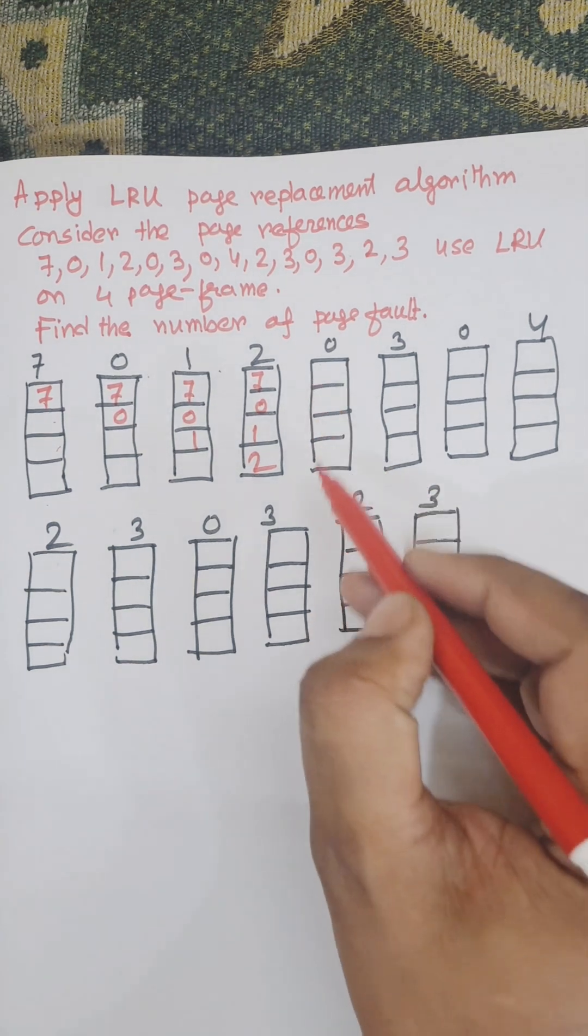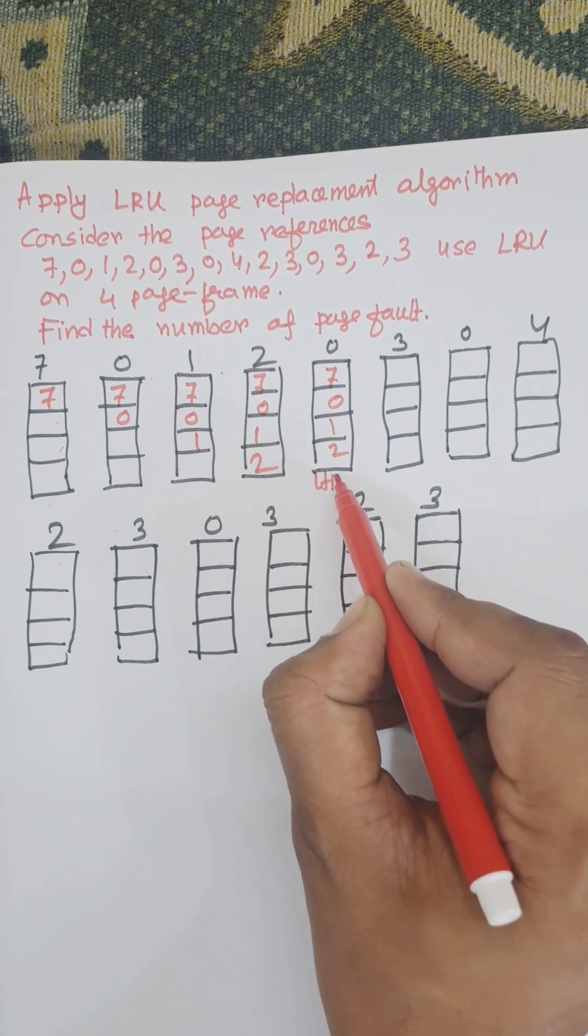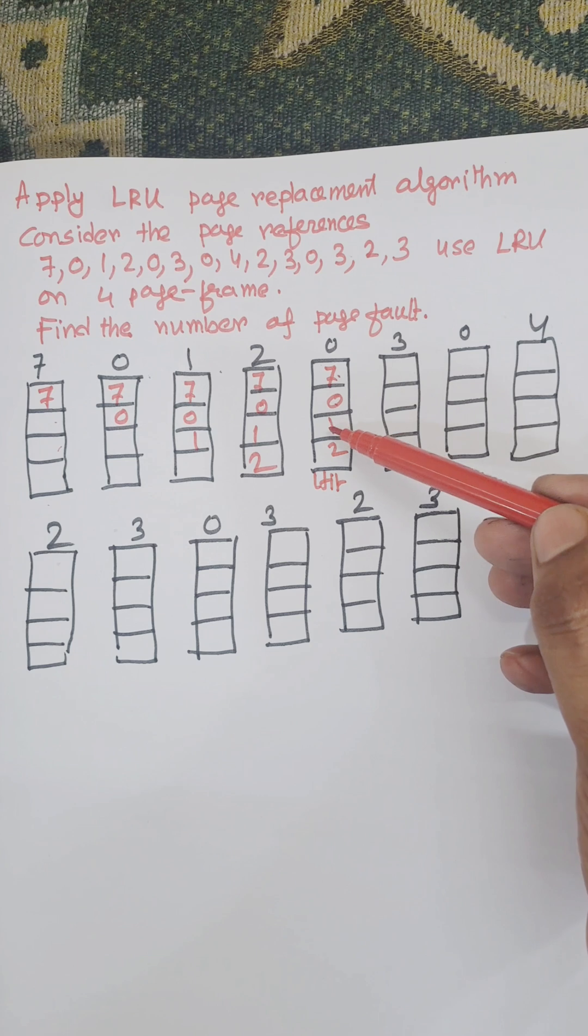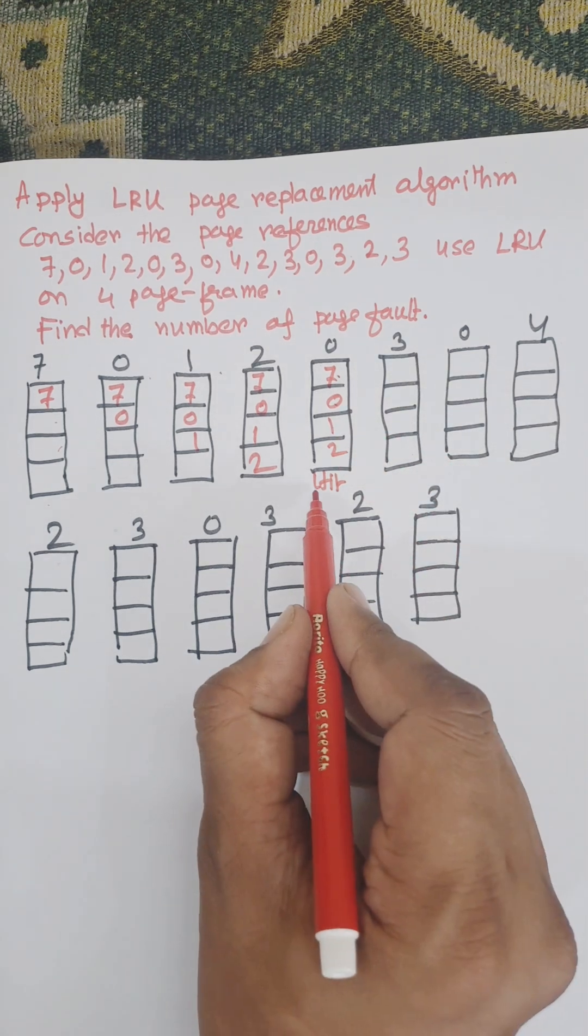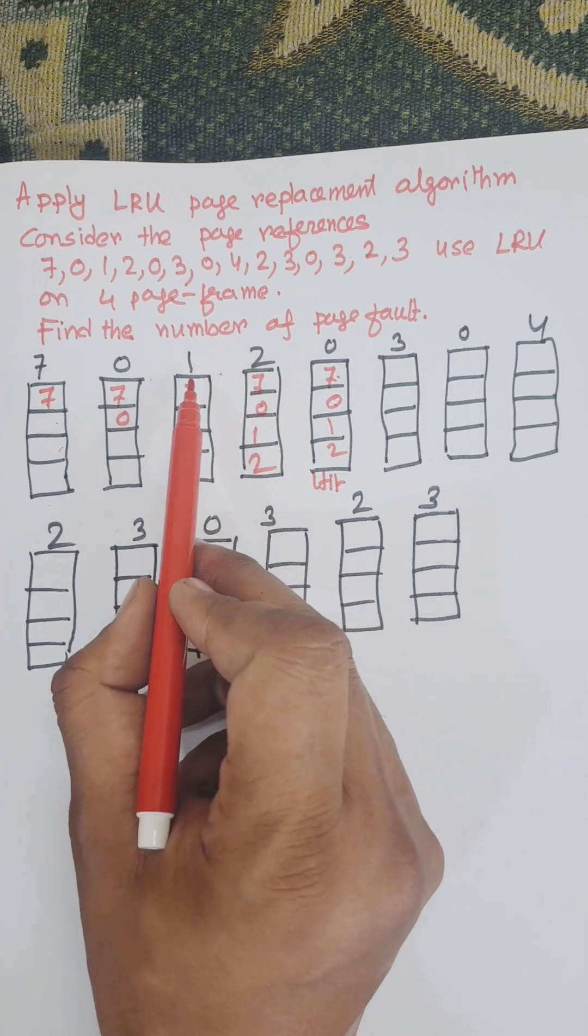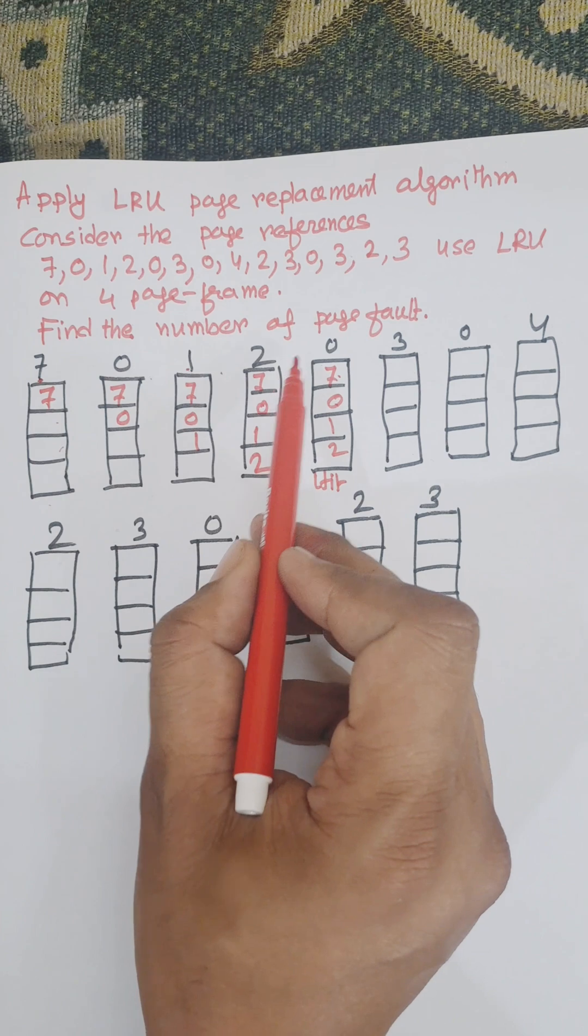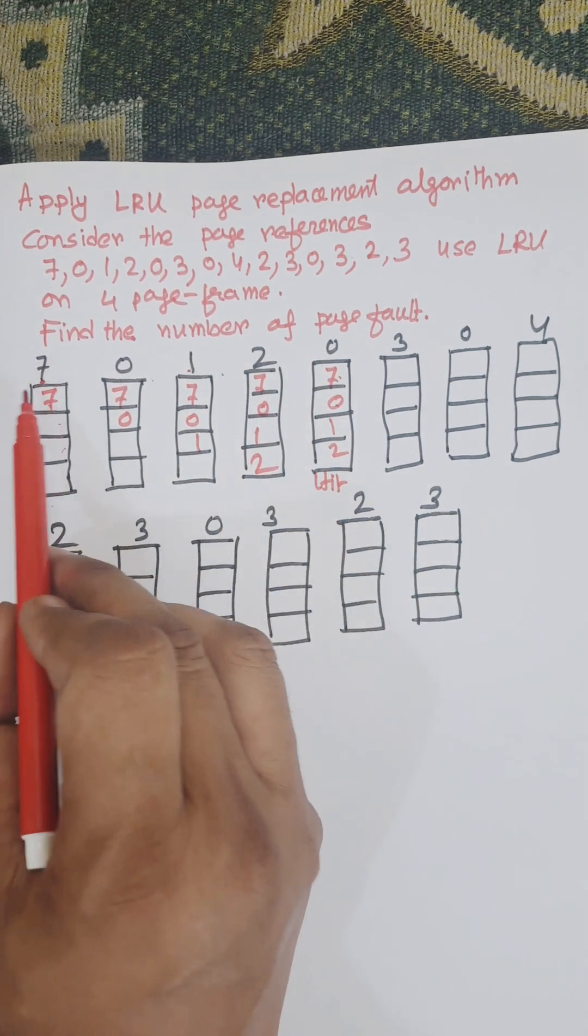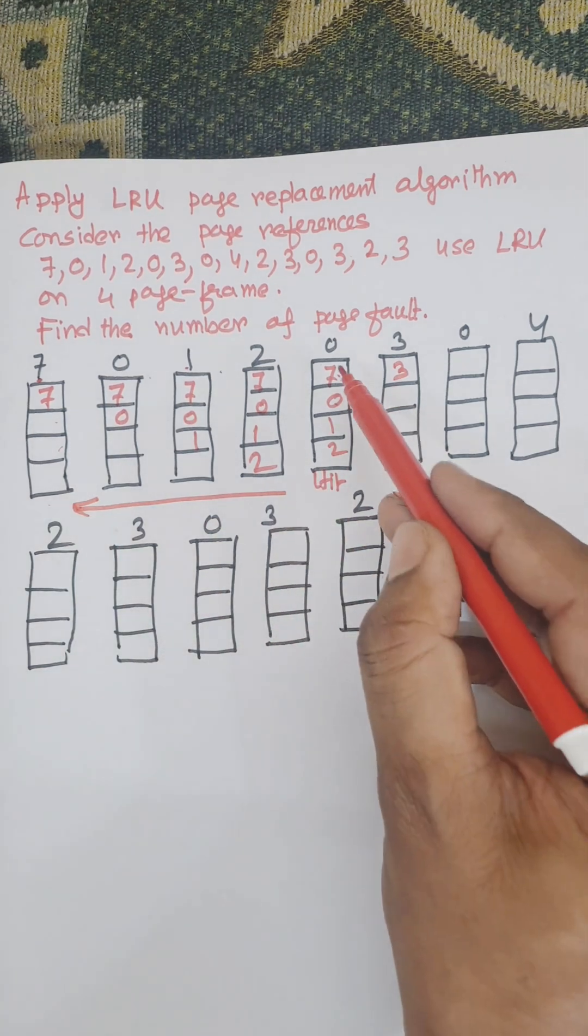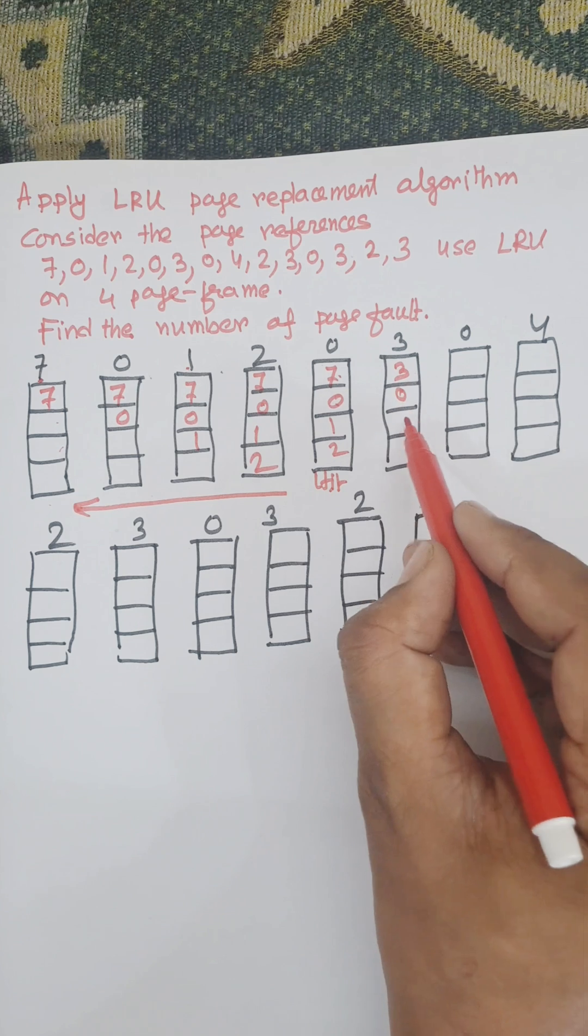Now zero is available, so it's a hit. Next, three needs to be replaced among 7, 0, 1, 2. Using the backward technique, zero is here, two is here, one is here, so seven is the least recently used data. Seven is replaced by three. The new state is 3, 0, 1, 2.